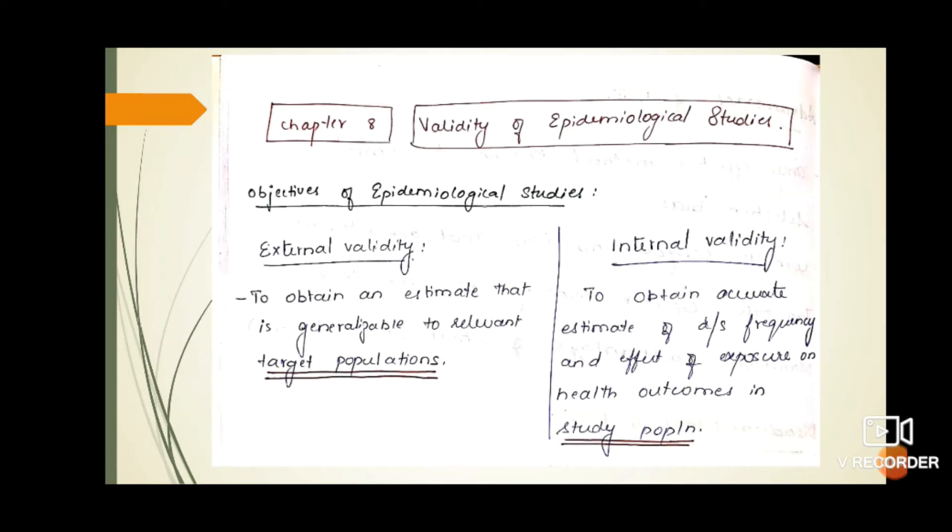Internal validity is how accurate is the estimation of the disease frequency and the effect of that exposure on the health outcome in that particular study population.